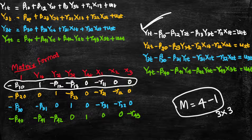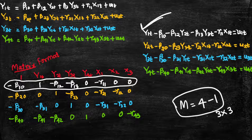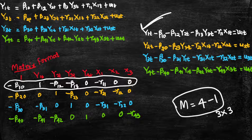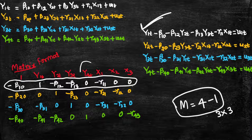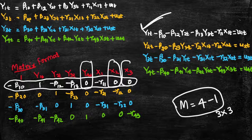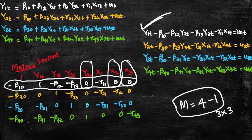If the determinant is not equal to zero the equation is identified; if the determinant is zero, the rank is less than three and it is not identified. For equation one, we circle the coefficients of equation one — that row is excluded. We then consider the columns where zero appears, meaning those variables are not present in equation one.